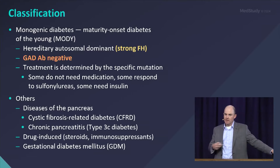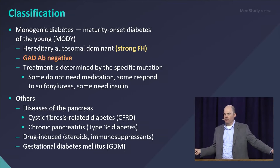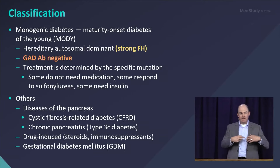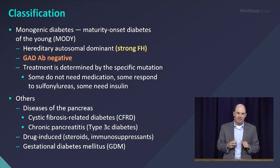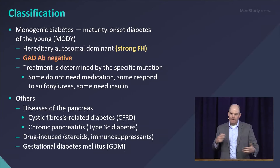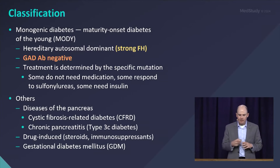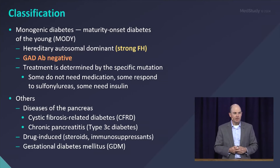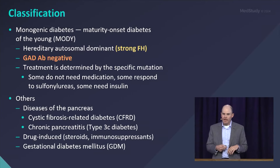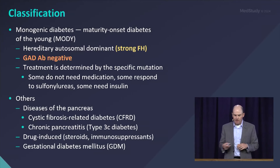Patients with monogenic diabetes have negative GAD antibodies and usually have a strong family history. Because of the inheritance pattern, they'll have multiple family members — on their father's side, for example — with quote type 1 or type 2 diabetes at a young age. That's the hint on a test question for monogenic diabetes. These are all treated differently depending on the mutation; some don't require any therapy beyond dietary modification. Genetic panels can be ordered to detect the abnormality.